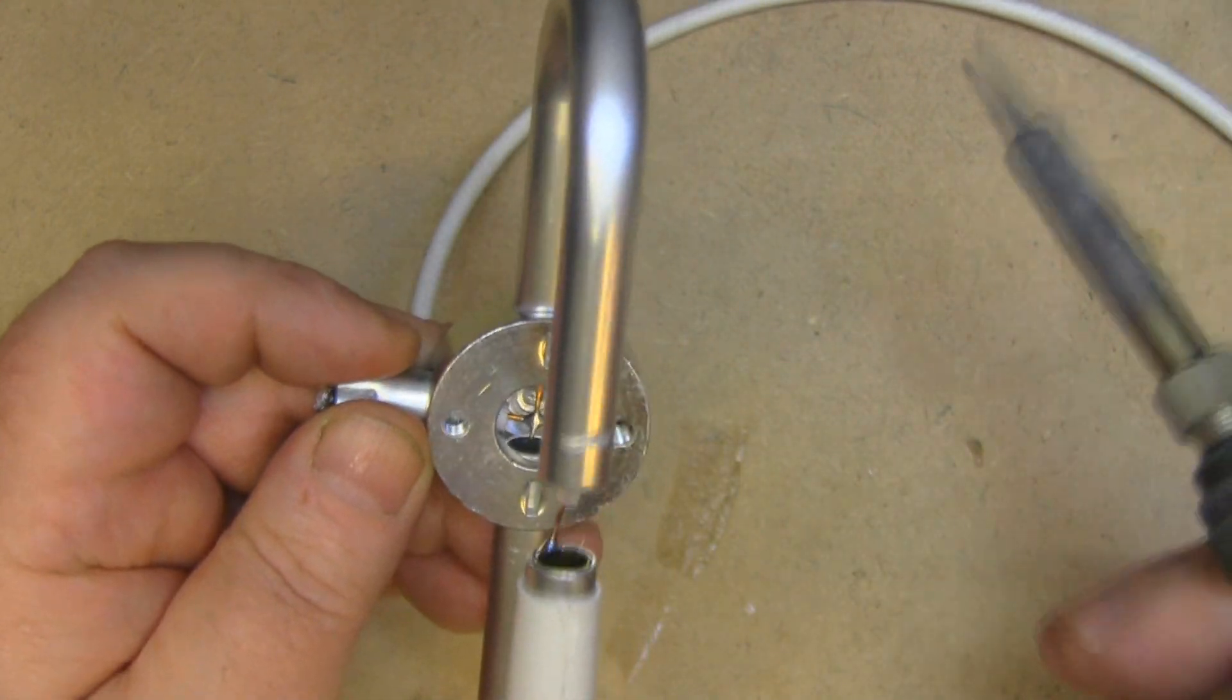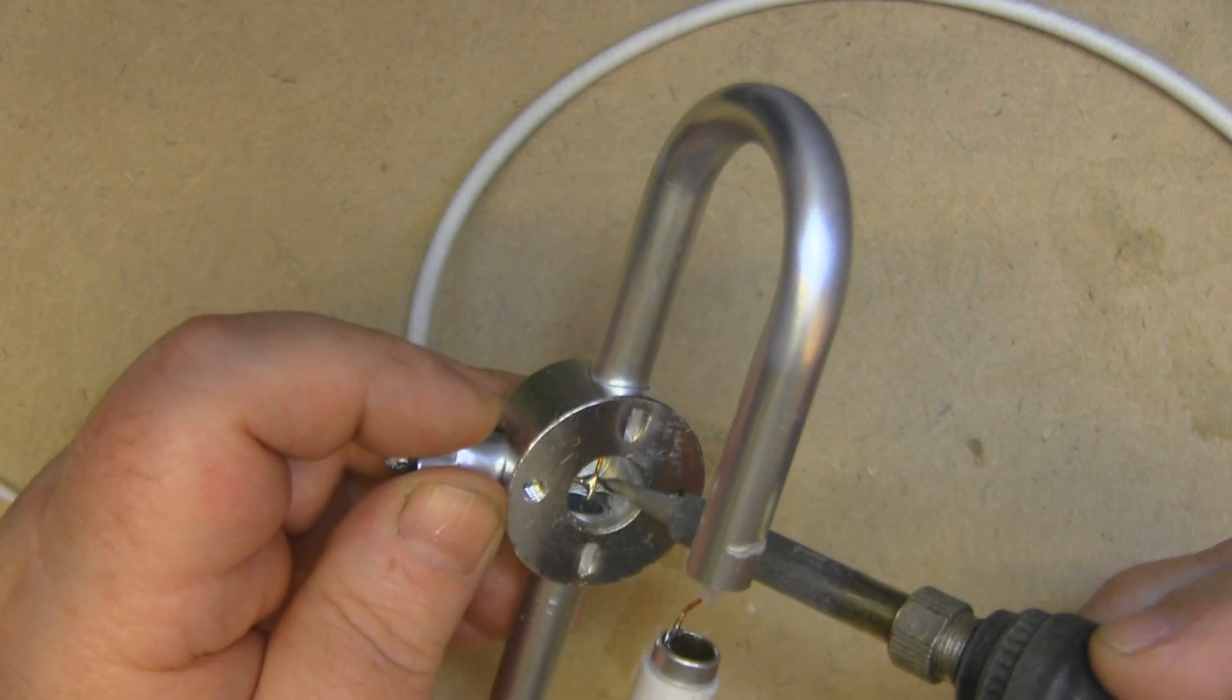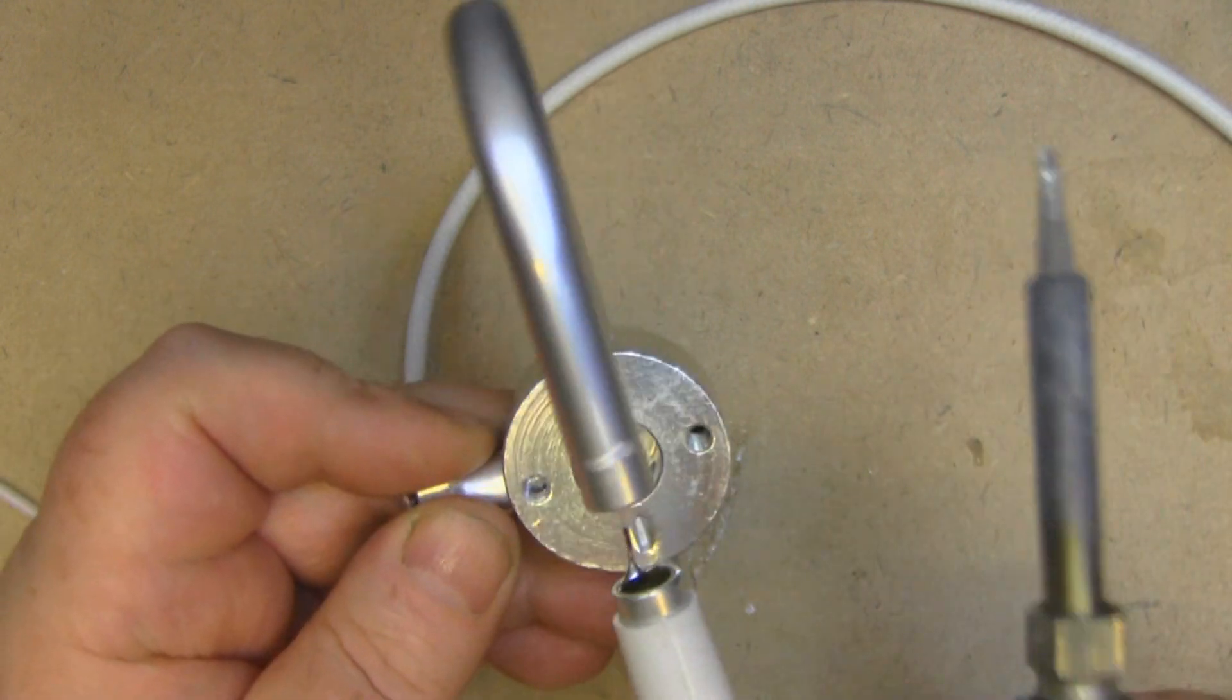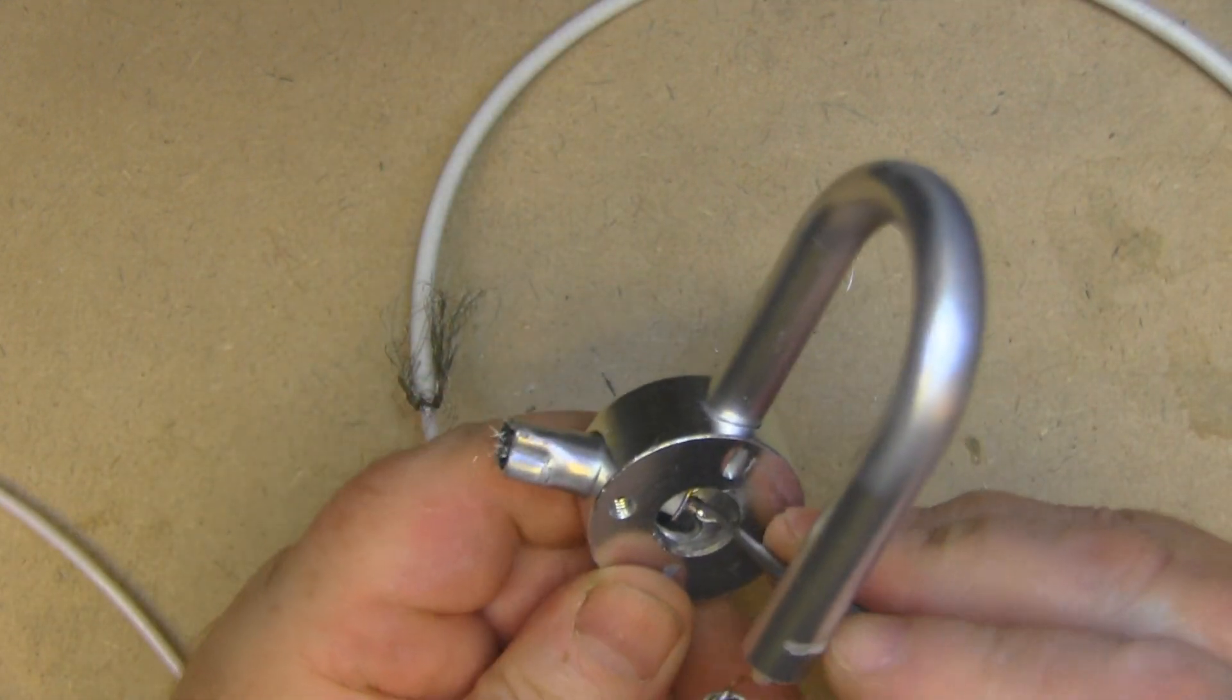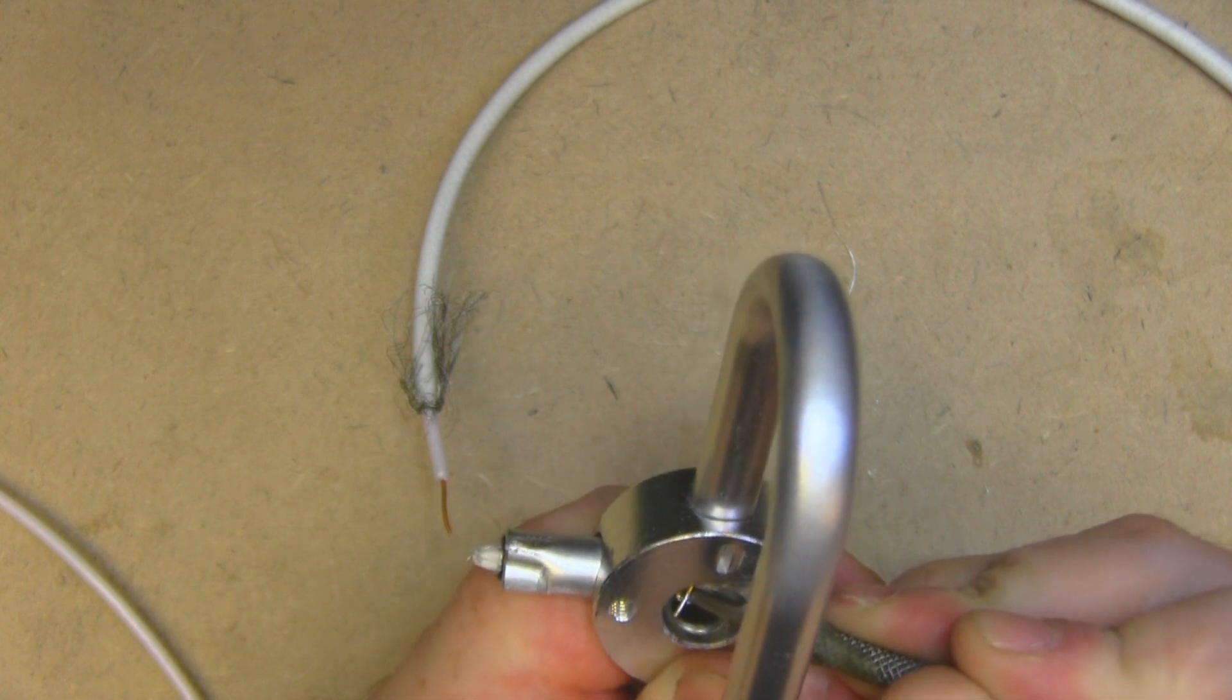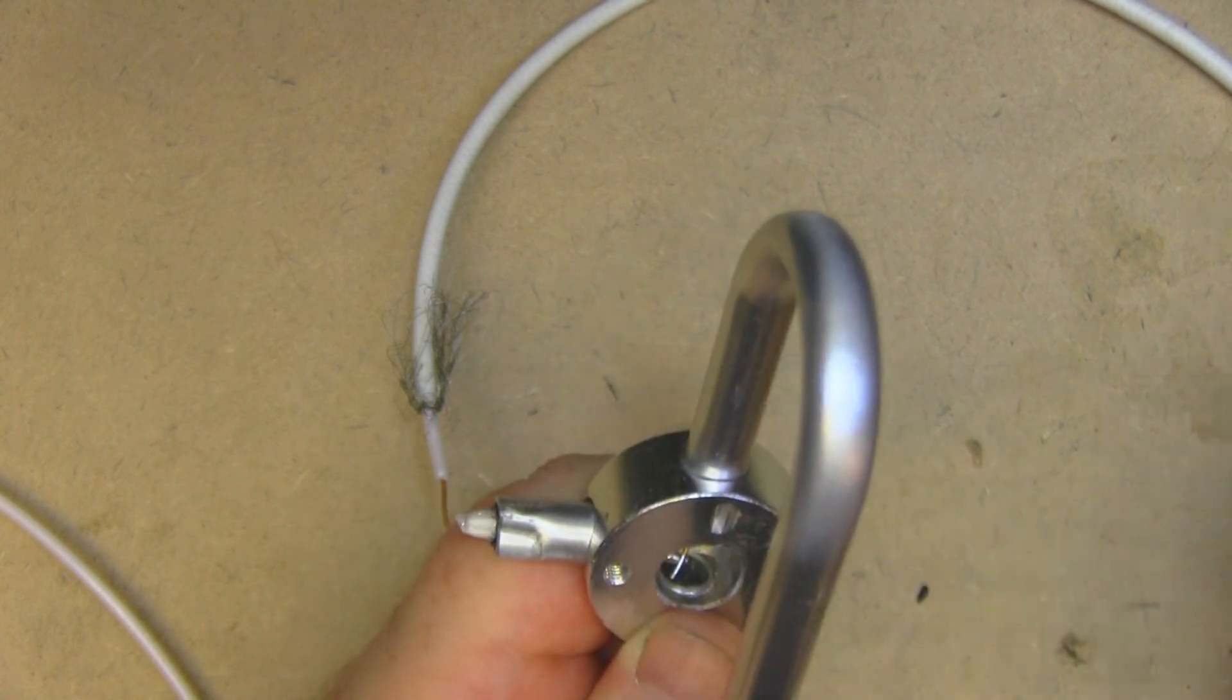So now what I want to do is desolder these two pins so I can pull the old coax out of there. Maybe if I push it from this side, I'll get the inner core anyway.